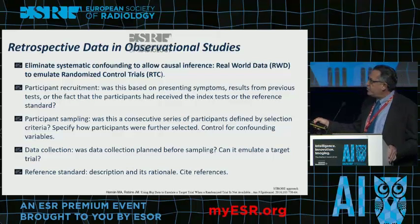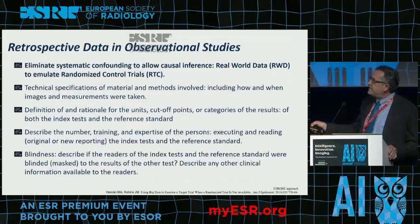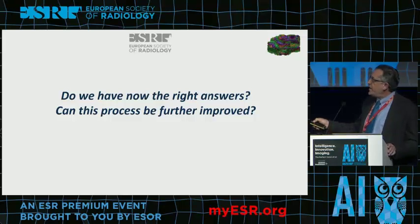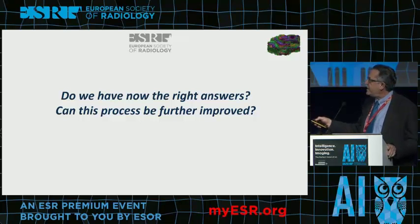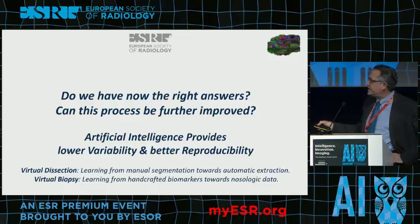To do this properly we must take care of patient recruitment, participant sampling, data collection, reference standards, technical specifications, definitions of units and categories, the number and expertise of persons involved, and blinding. Having all of this in place while asking the real-world population what is happening there, can we get the right answer or further improve the process? We believe artificial intelligence is the answer, because it can provide lower variability and better reproducibility of results.